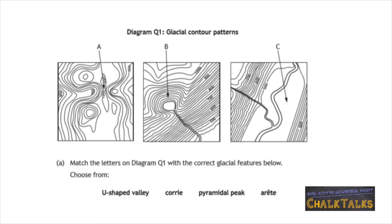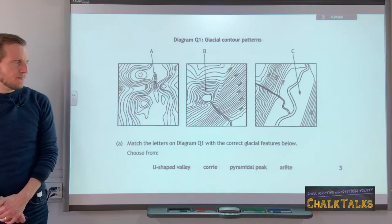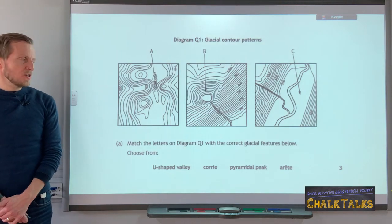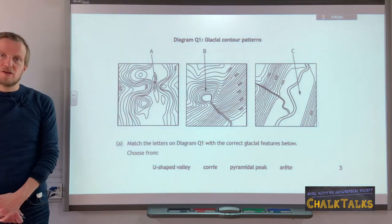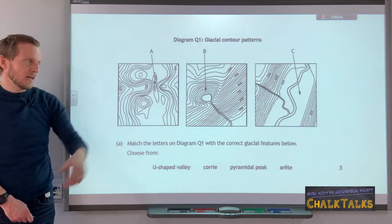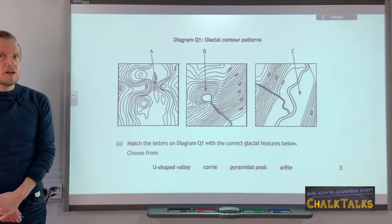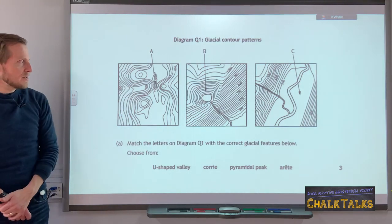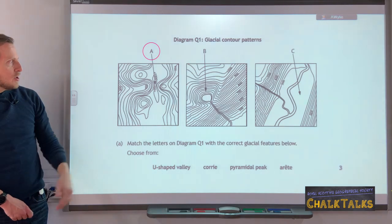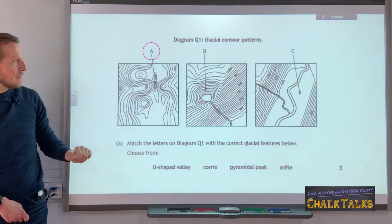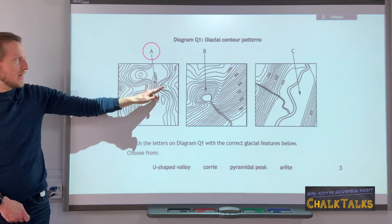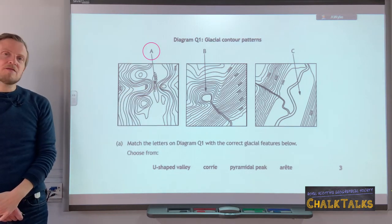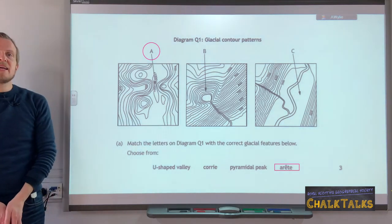In our final example we don't need to use the Ordnance Survey map. We are given the contour patterns for three different features and four choices, meaning one would be inaccurate. Contour pattern A shows a couple of Corries on either side and a very narrow ridge with contours rising up to it — that contour pattern is very common for the Arete, so A would be the Arete. B shows curving contour patterns like the letter U around a feature which would be a Tarn, so we have a Corrie here.